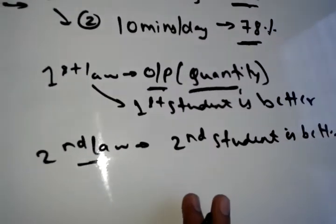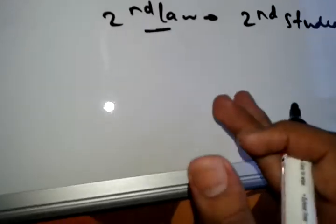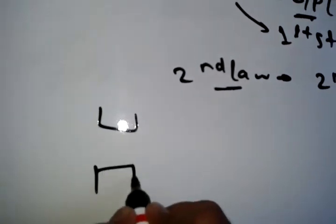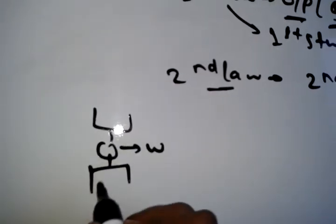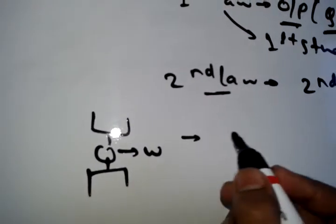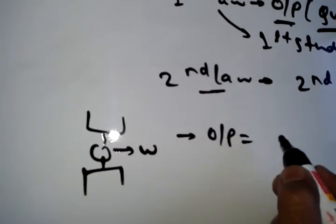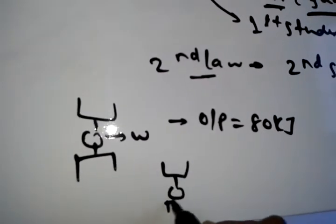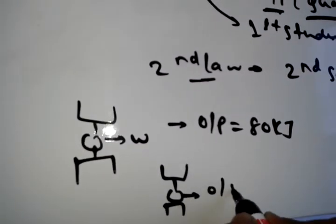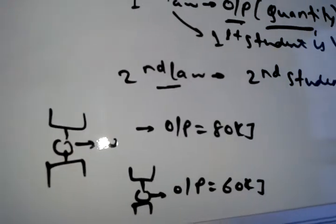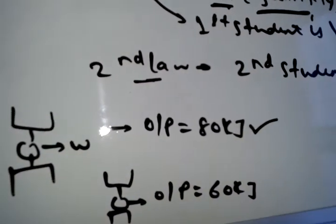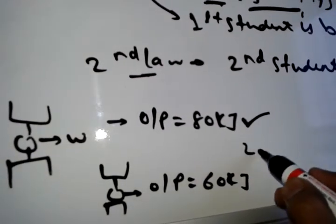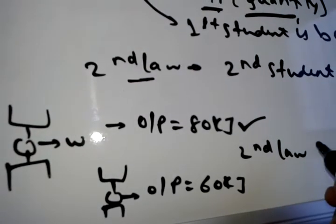If you apply this to engines in thermodynamics — if one engine gives an output of 80 kJ and another gives 60 kJ, then according to the first law, the first engine is good, because the first law sees quantity only. But according to the second law, it will not be like that.